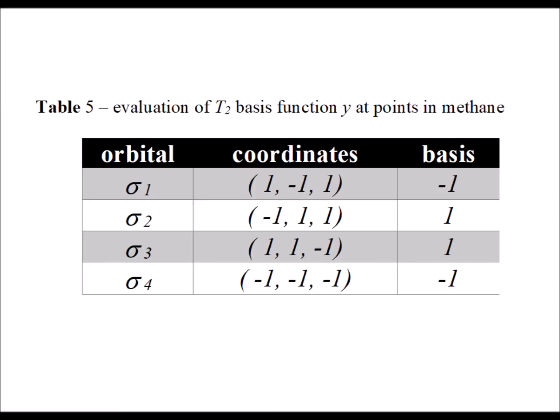The second T2 basis function, y, we evaluate in table 5. Here we see that it's evaluated as minus 1, 1, 1, and minus 1. We just directly take the y coordinate for each particular orbital, and that becomes the coefficient in the linear combination. Notice that we did not have to derive this T2 orbital from the previous T2 orbital, but we could just go at it directly when we use the Kim method.